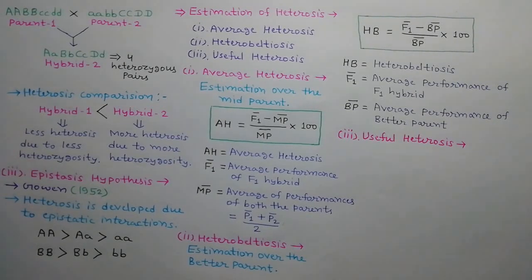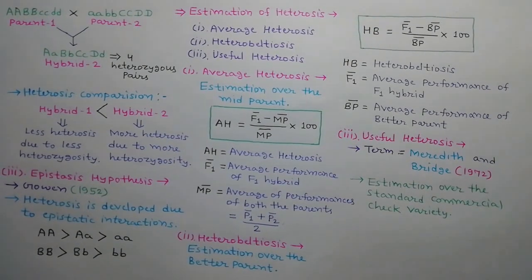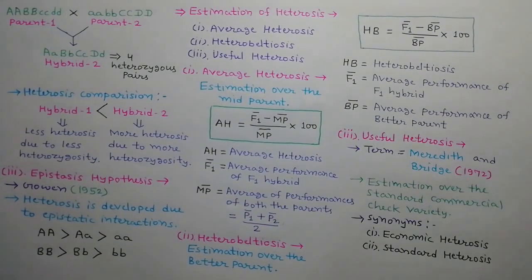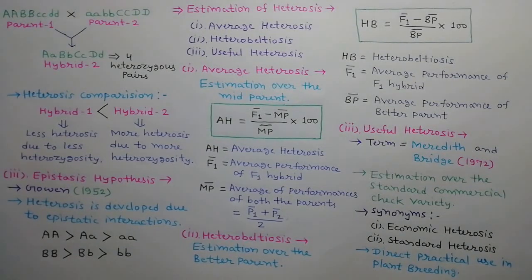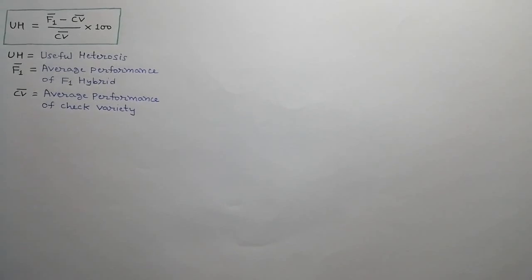The third is useful heterosis. The term useful heterosis was used by Meredith and Bridge in 1972. When heterosis is estimated over the standard commercial check variety, it is called useful heterosis. It is also called economic heterosis and standard heterosis. This type of heterosis is of direct practical value in plant breeding. Useful heterosis is estimated by: UH = (F1̄ − CV̄) / CV̄ × 100, where UH is useful heterosis, F1̄ is the average performance of the F1 hybrid, and CV̄ is the average performance of the check variety.